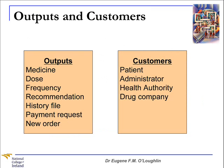Step number two allows us to identify the outputs of this process. The outputs are: medicine, dose, frequency, recommendation, patient history file, a payment request for the medicine, and a new order for replacement drugs. Step number three — the customers of these outputs are the patient, a hospital administrator, health authorities who may require invoices for publicly supported patients, and the drug company which receives a new order.